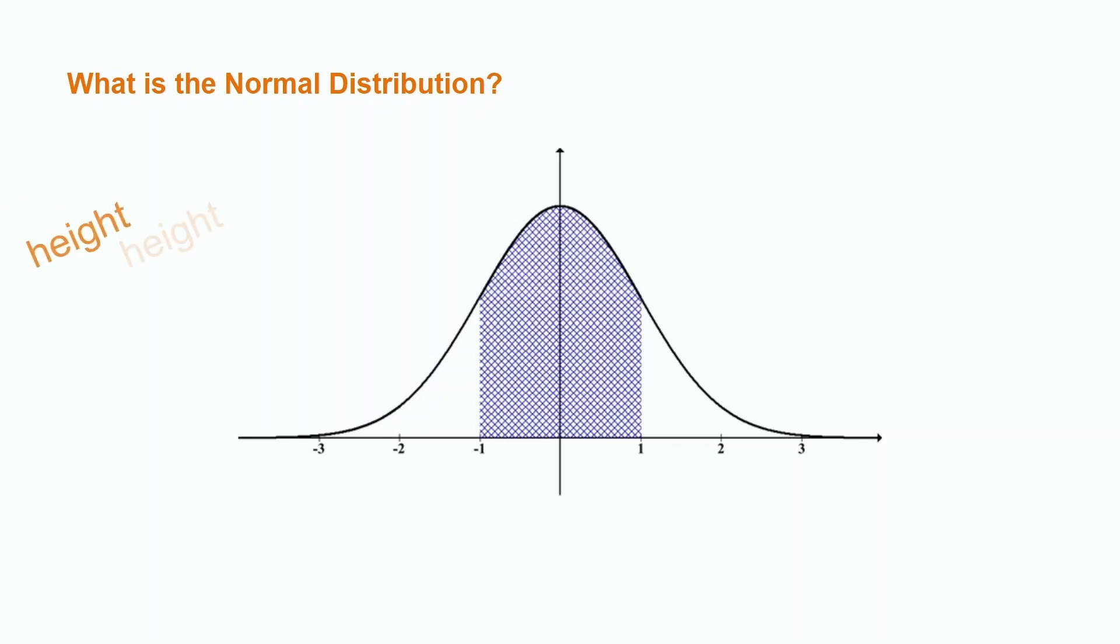Aside from height, examples of other variables that follow the normal distribution are IQ, SAT scores, and birth weights.